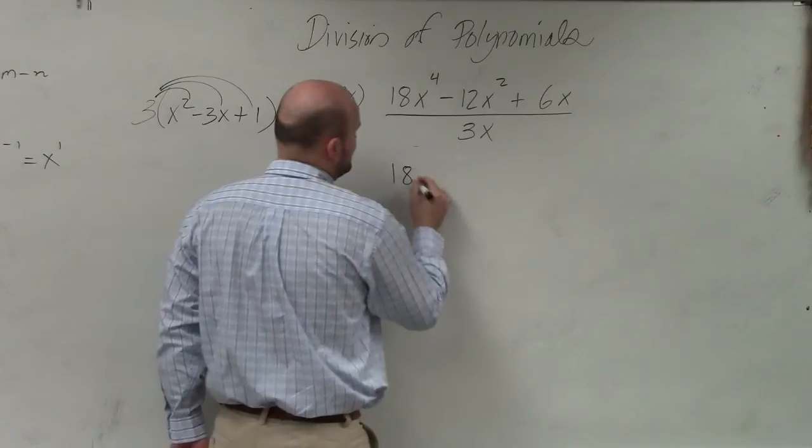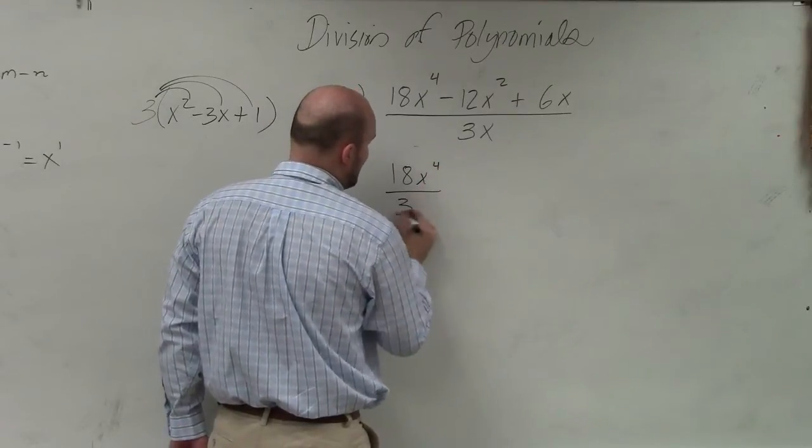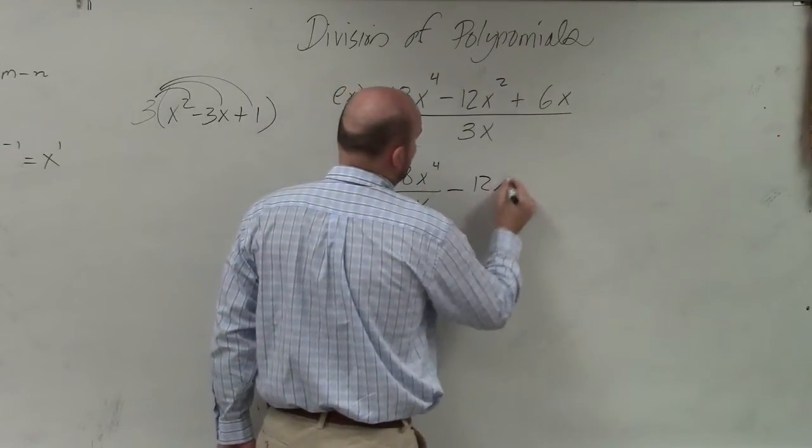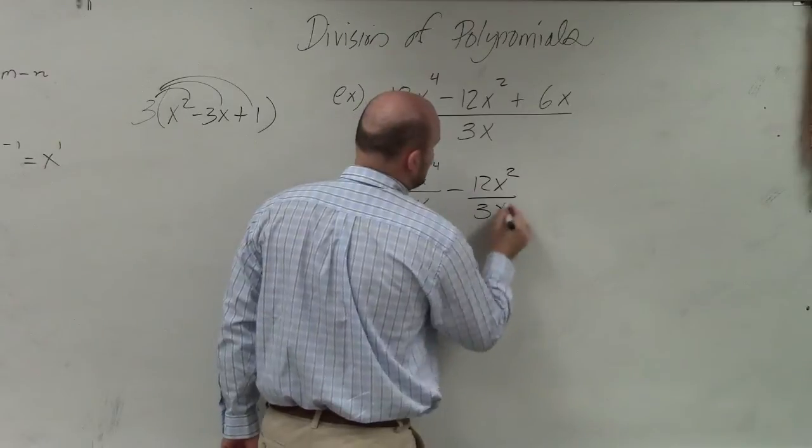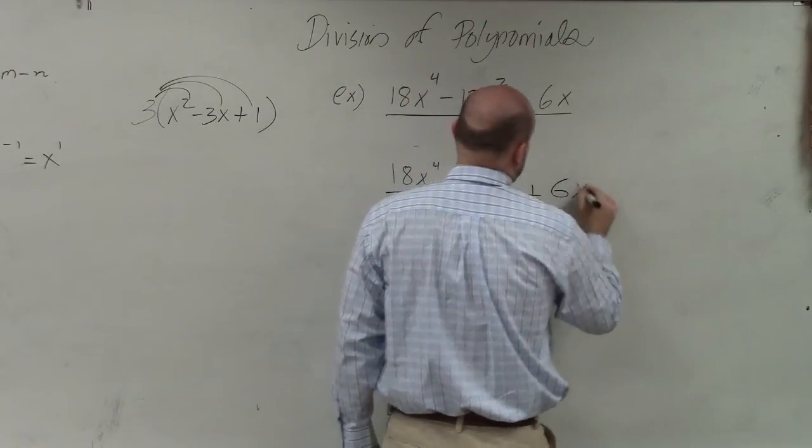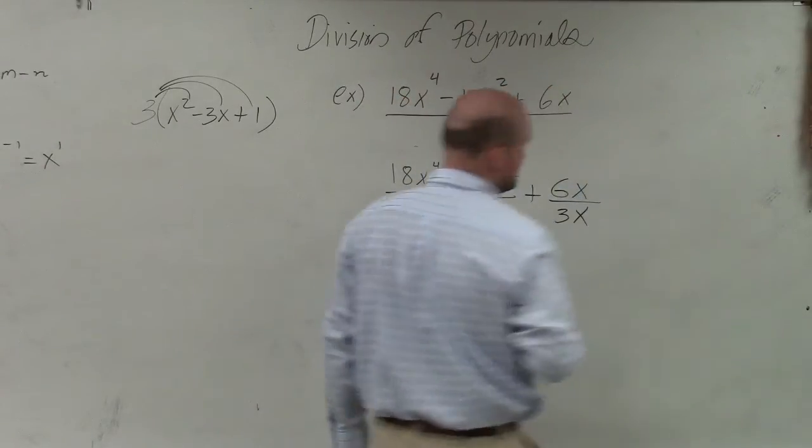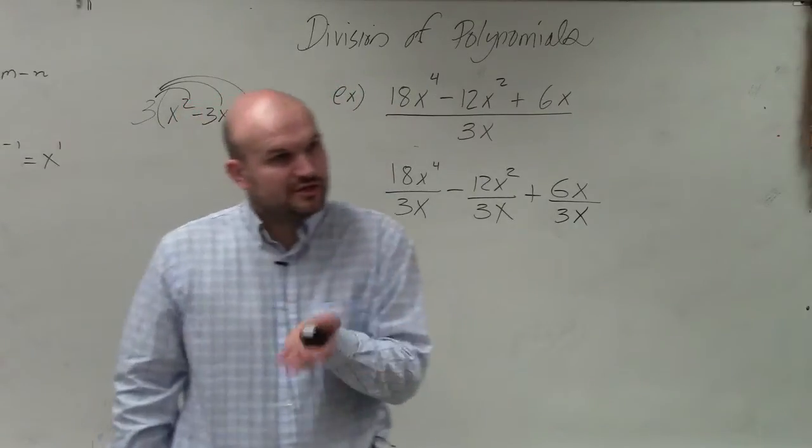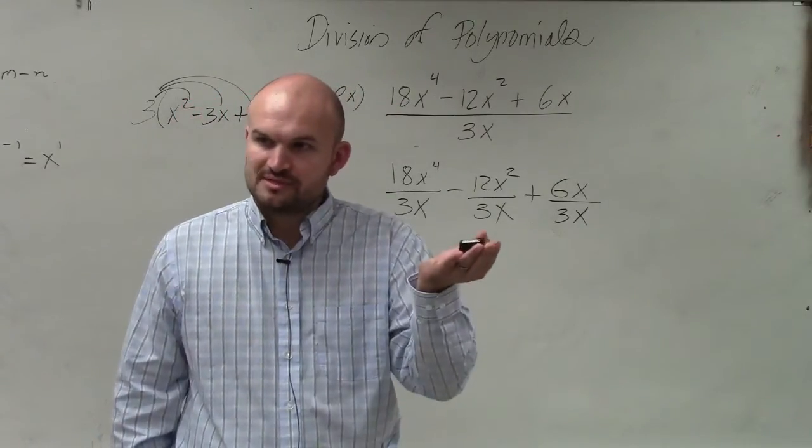So this is 18x to the fourth divided by 3x minus 12x squared divided by 3x plus 6x divided by 3x. So your divisor, make sure you divide that into each and every one of those terms, OK?